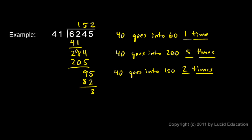And then I subtract. 5 minus 2 is 3. And 9 minus 8 is 1. So I have 13. So there's my answer. 152 remainder 13.